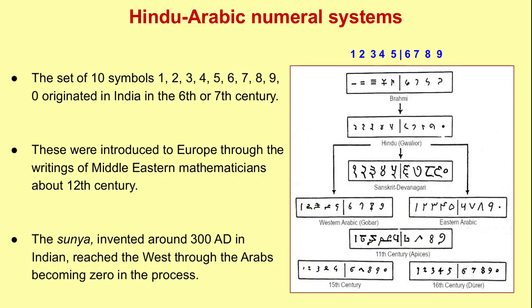Let's start with Hindu-Arabic numerals — a set of 10 symbols from 1 to 9 and 0 that represent numbers in the decimal number system. They originated in India in the 6th or 7th century and were introduced to Europe through the writings of Middle Eastern mathematicians around the 12th century.